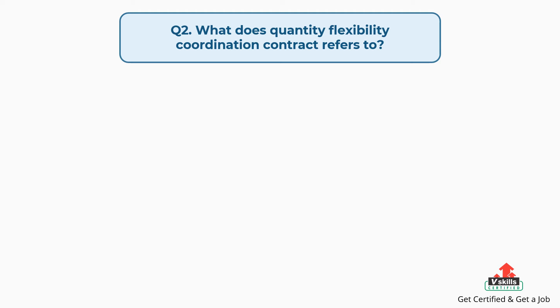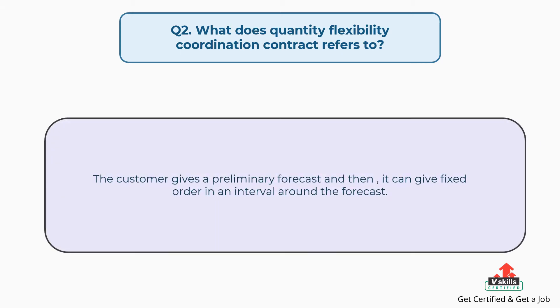Question number two: what does a quantity flexibility coordination contract refer to? The answer is the customer gives a preliminary forecast and then it can get a fixed order in an interval around the forecast.